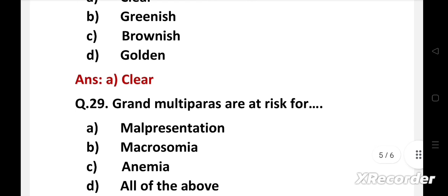Next question. Grand multiparous are at risk for - option A: malpresentation, B: macrosomia, C: anemia, D: all of the above.